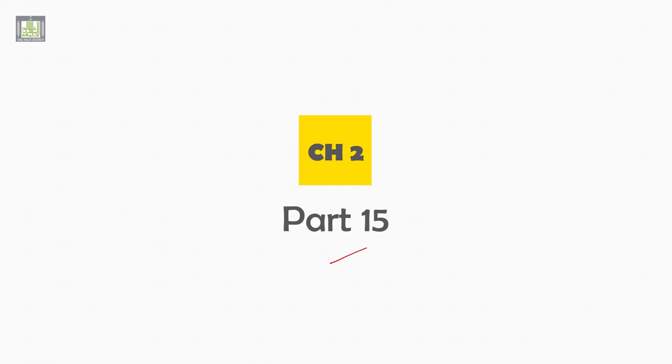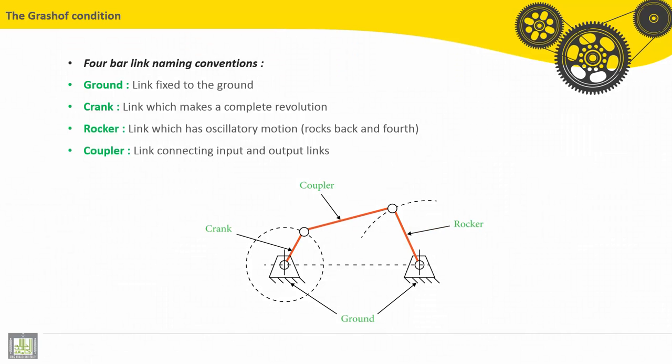Welcome to this chapter, the second part of chapter two. Here we will see the Grashof condition for four-bar linkage naming conventions.